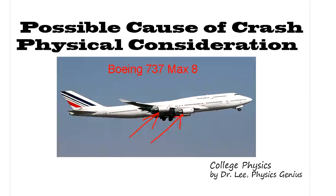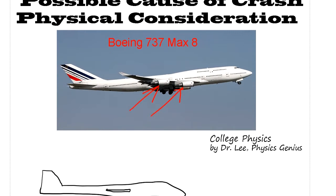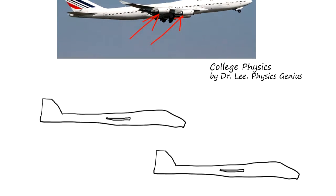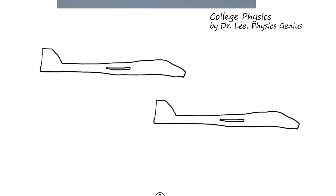Boeing 737 MAX 8 crashed twice in very similar circumstances, so we are going to speculate on the possible cause of the crash using physics knowledge. This is purely speculation based on information in the news, and the purpose is to practice your physics knowledge about airplanes.